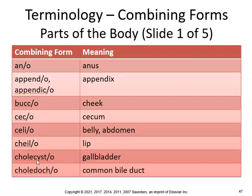Choleste is gallbladder. Cholodoc is the common bile duct. So a cholodactomy would be incision of the common bile duct. Cholocystectomy would be removal of the gallbladder. Remember, ectomy is removal. Chilosis would be like an abnormal condition of the lip, and celiac would be celiac disease, pertaining to the abdomen.